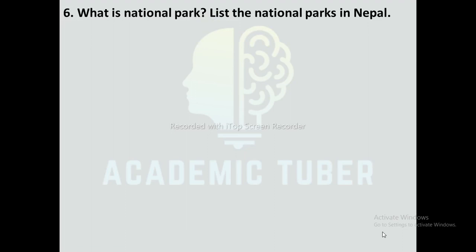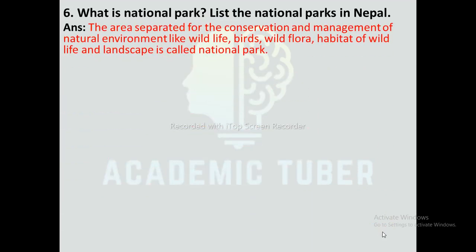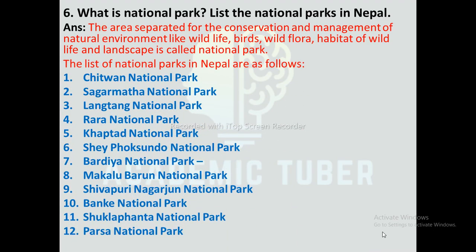Question number 6: What is a national park? List the national parks in Nepal. The area separated for the conservation and management of the natural environment including wildlife, birds, wild flora, habitat of wildlife, and landscapes is called a national park. The list of national parks in Nepal are as follows.